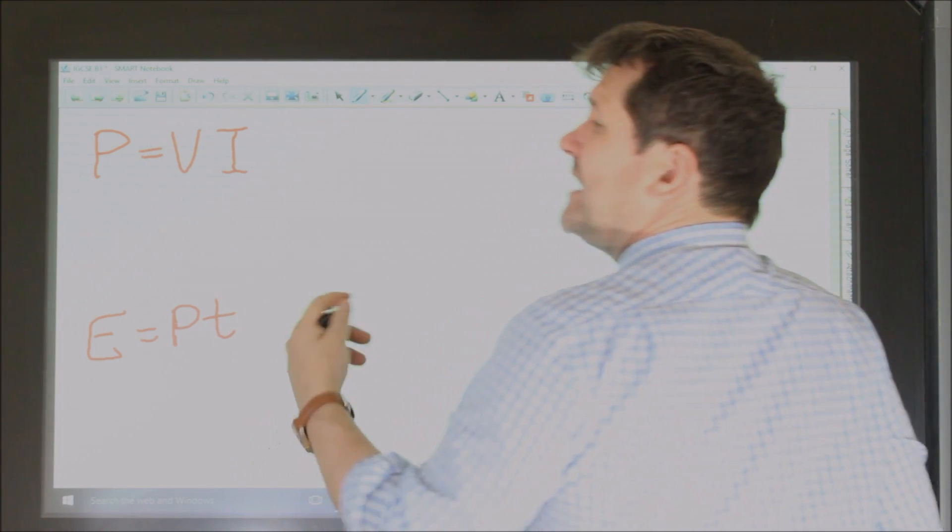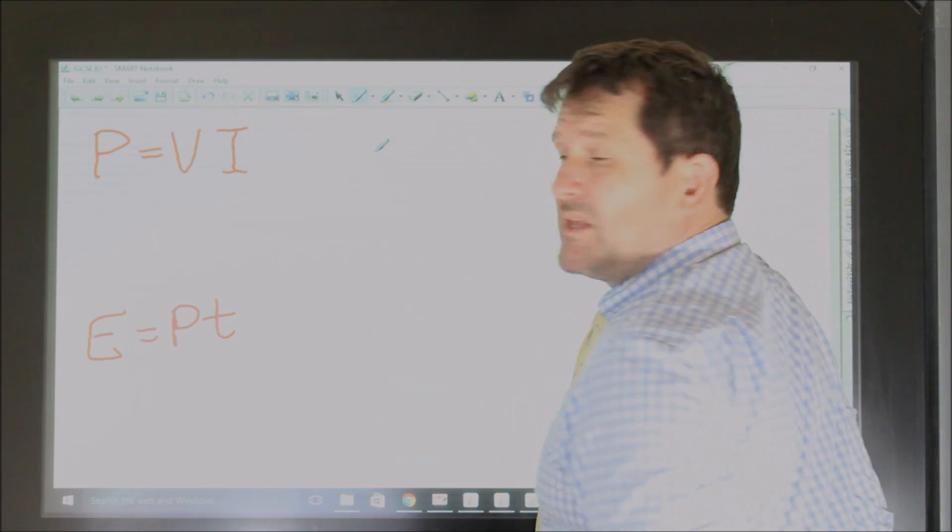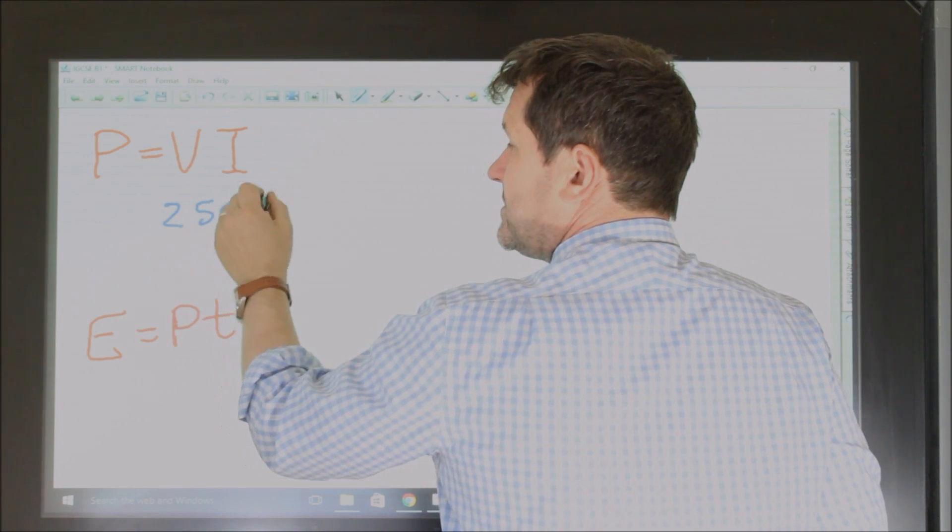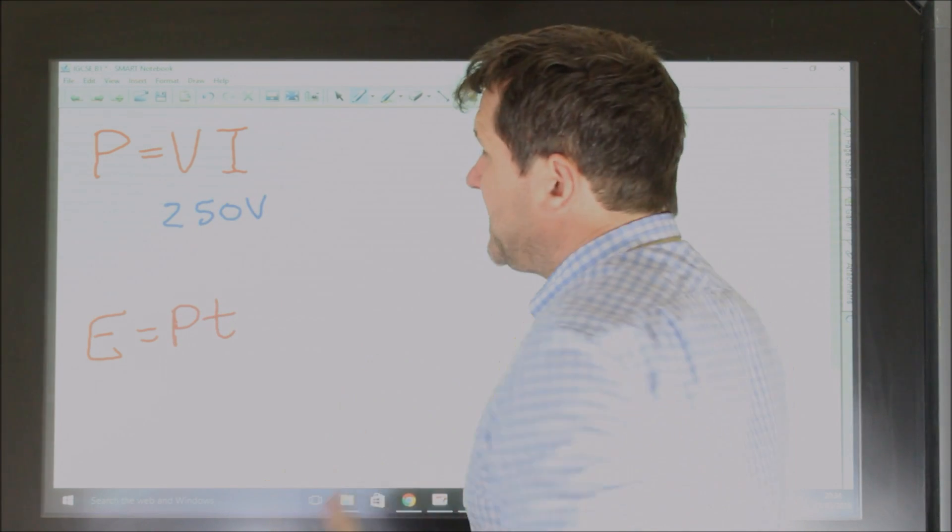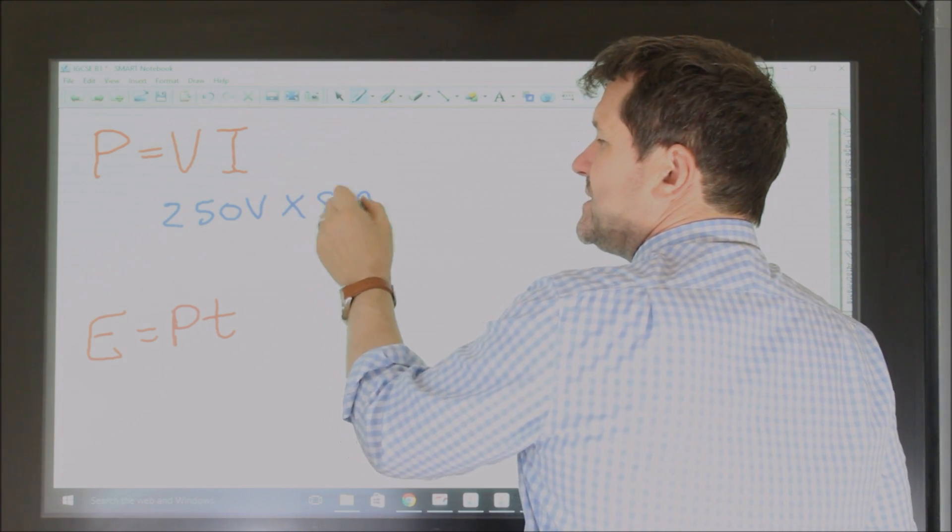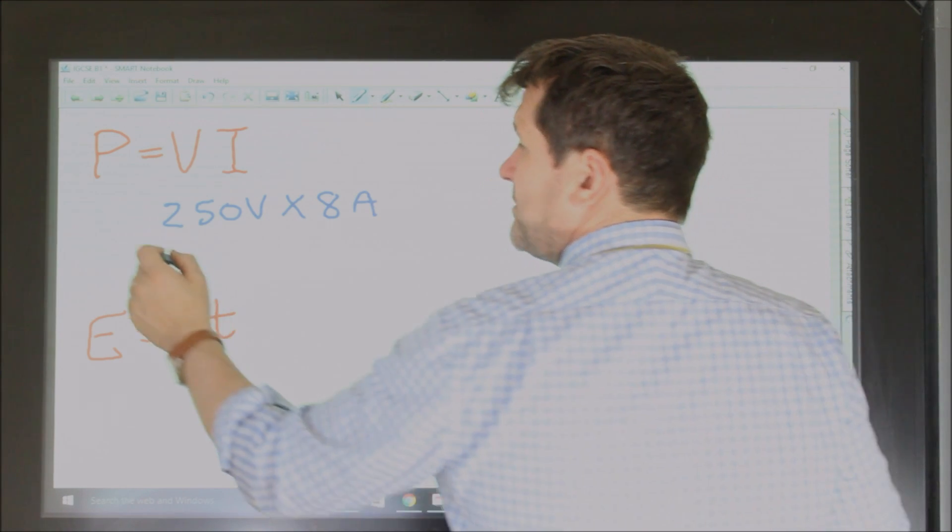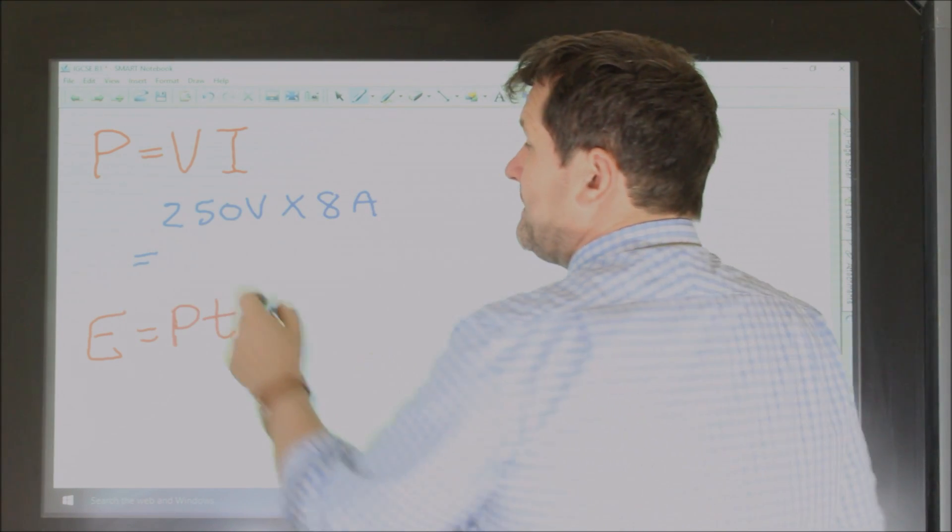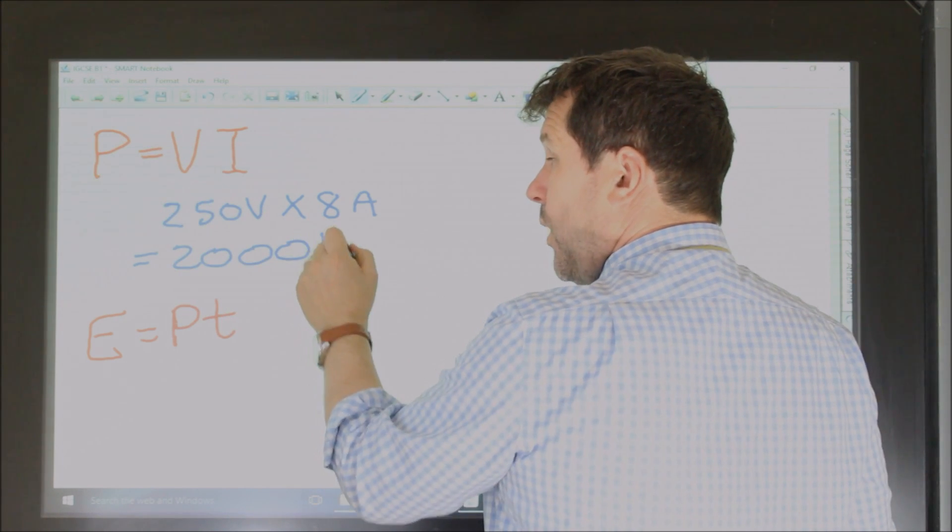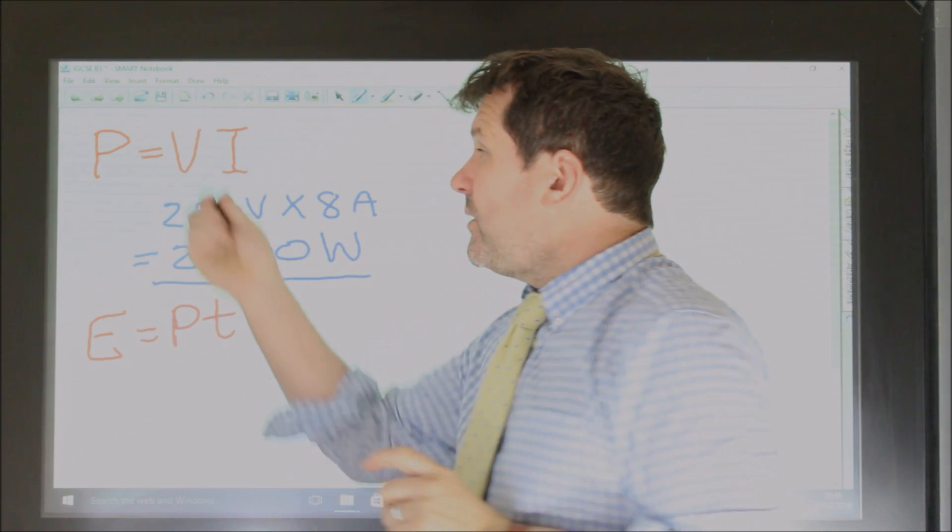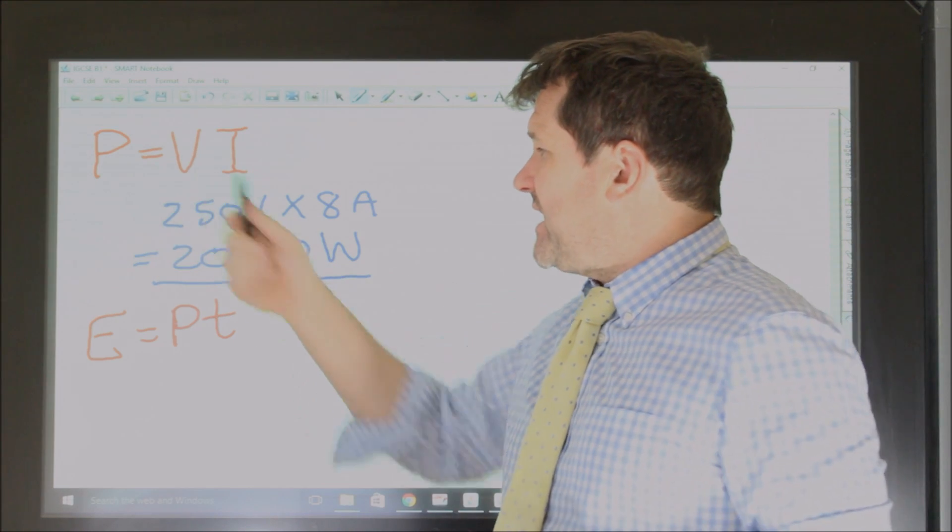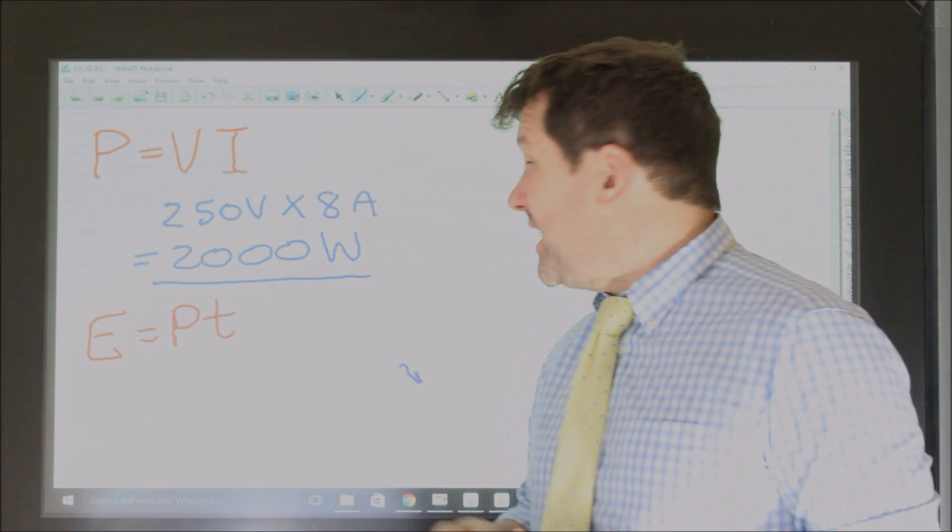So for example, if you have a hairdryer and you plug it in, and the mains is 250 volts, that means that if the current in this hairdryer is say 8 amps, we can say the power of the hairdryer would be 8 times 250, which is 2000. Now power is measured in watts. Voltage is measured in volts, current is measured in amps. But the power of this hairdryer would be 2000 watts.